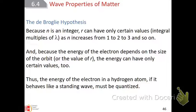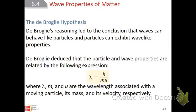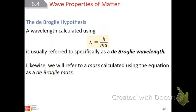He said that if the energy of an electron in a hydrogen atom behaves like a standing wave, then we ought to be able to quantize it. That's what led to the de Broglie expression, where you have lambda — lambda should be familiar to you from the other day — and H, that's Planck's constant. M is the mass, and U stands for velocity. Any wavelength can be calculated using this de Broglie wavelength formula.